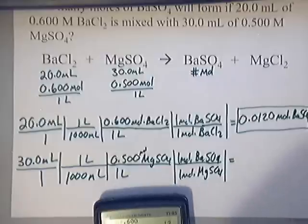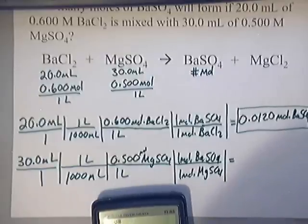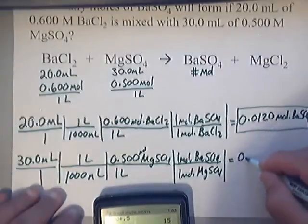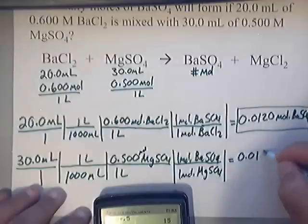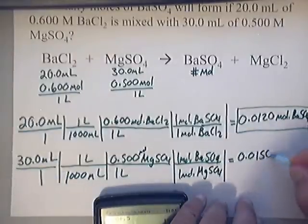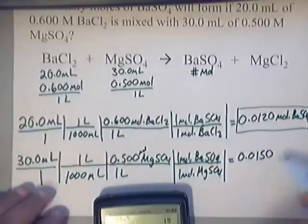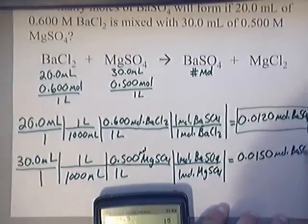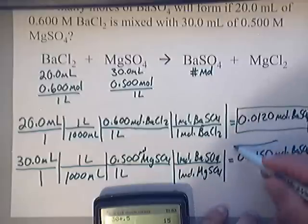Push that into the handy dandy calculator. That's 30 times 0.5. That's 15 divided by 1,000. And I get 0.015. That's 2 sig figs. I need 3. So that's going to be 0.0150 moles of BaSO₄. So I now have both numbers.